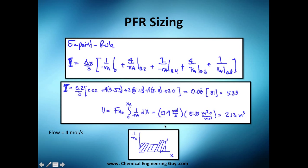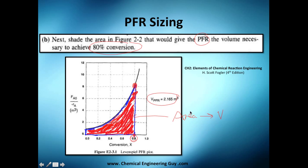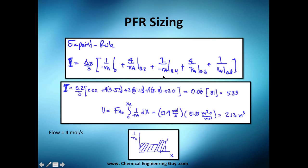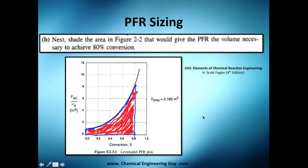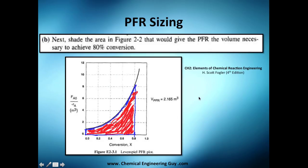For letter B, shade the area in the figure that gives the PFR volume for 80% conversion. Identify 80% conversion on the X-axis, intersect with the plotted curve, and shade all the area underneath — shown here in red. The book's answer is 2.16 cubic meters, which falls between our two calculated values and is closest to the five-point rule result. All methods are approximate.